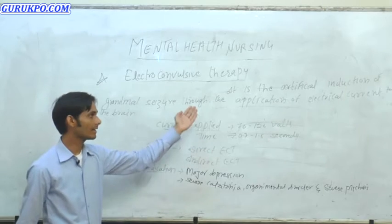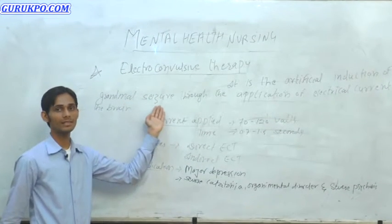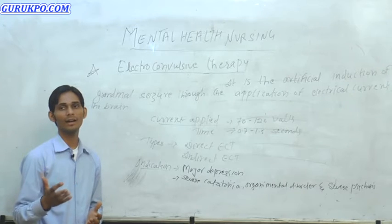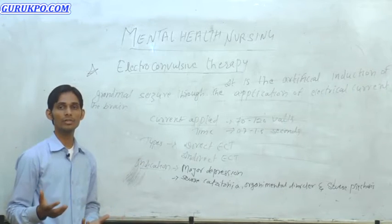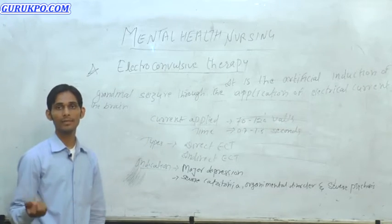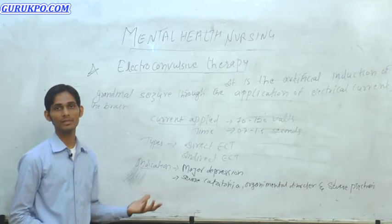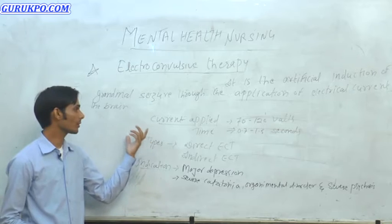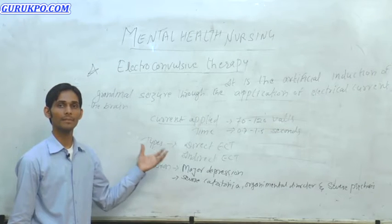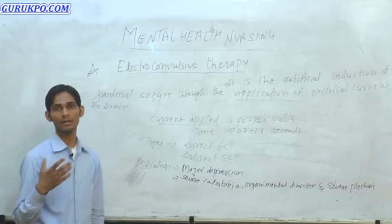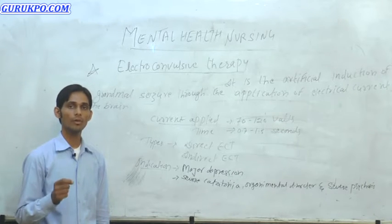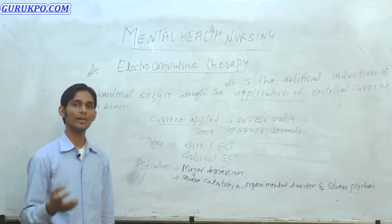Electroconvulsive therapy means the artificial induction of grand mal seizure through the application of electrical current. It is given to patients — for example, in cases of depression — by placing electrodes on the person's head, on the right side for right-hand dominant persons and both sides for others. The electrical current applied is 70 to 120 volts for 0.7 to 1.5 seconds.